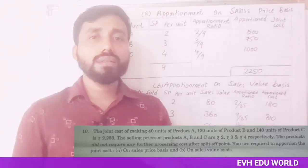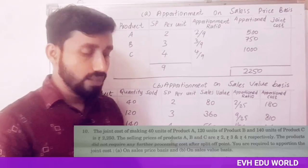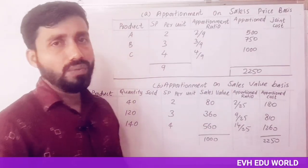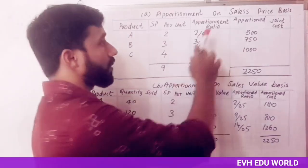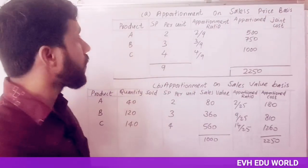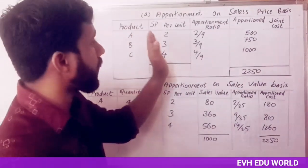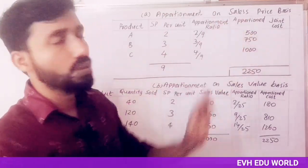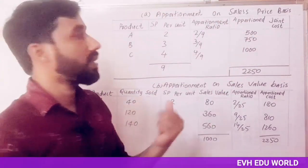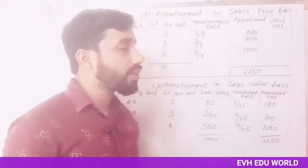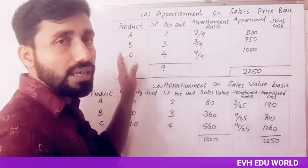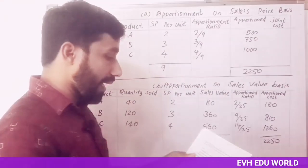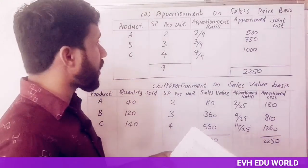For the apportionment on sales price basis, the columns are: product, selling price per unit, apportionment ratio, and apportioned joint cost. The products are A, B, and C. The selling price per unit for A, B, C is 2, 3, and 4.